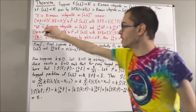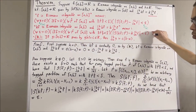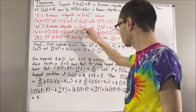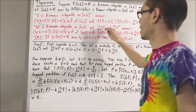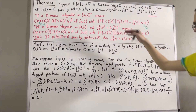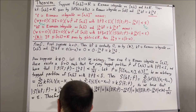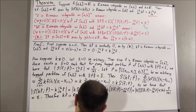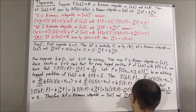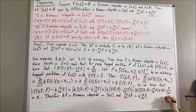And so we have proven this statement, which means we have proven that kf is Riemann integrable on [a, b] and that the value of the integral is k times the integral of f. This completes the proof.